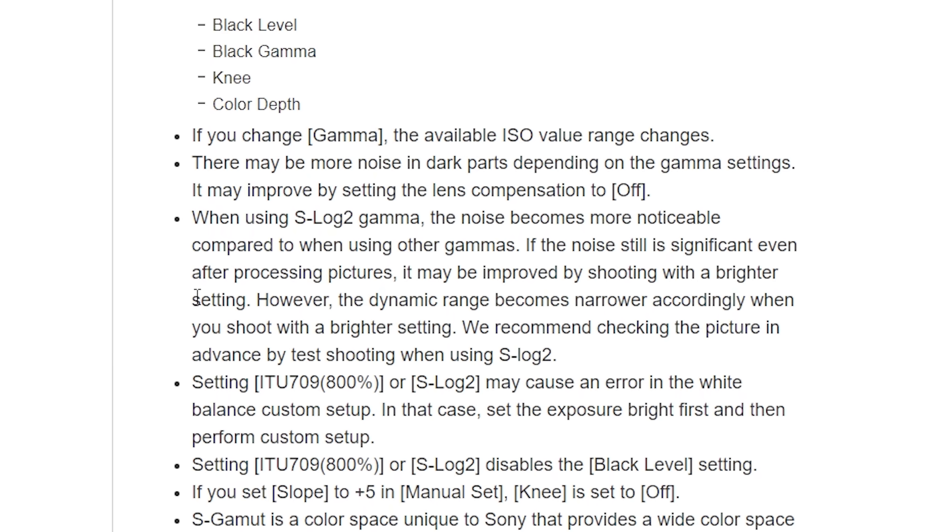Let's go back to the Help Guide. It says: 'There may be more noise in dark parts depending on the gamma settings. When using S-Log2 gamma, the noise becomes more noticeable.' Basically, what this lets us know is that there is a difference based on the gamma. What I think is going on is that when the analog-to-digital conversion happens — when data is being recorded from the sensor based on the charges gathered — there's a different gain, a different conversion being applied based on the gamma set in the picture profile. So the actual signal data recorded in the raw file is different depending on the gamma, but all the other stuff isn't.